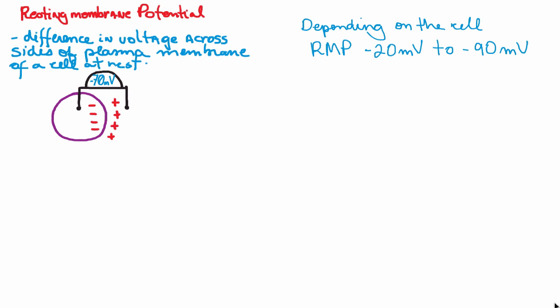Usually this value varies between minus 20 millivolts to minus 90 millivolts. Essentially, that's what it is - a difference in the number of charges, which does not mean that you actually have to have positive charges on one side and negative charges on the other side, but an imbalance in the number of charges.